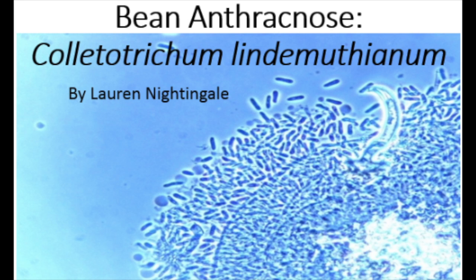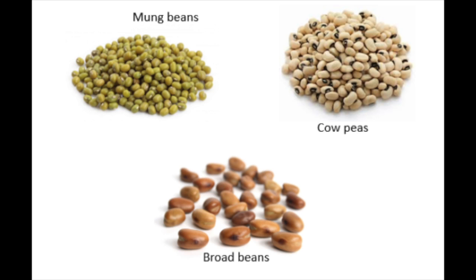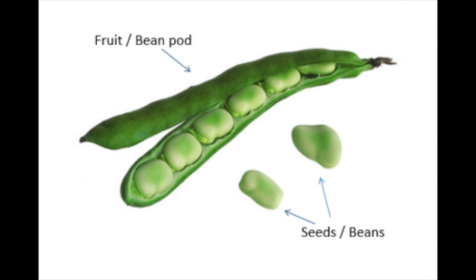This disease affects crucial legume crops in the Phaseolus genus, such as snap beans, lima beans, scarlet runner beans, mung beans, cowpeas, and broad beans. These host crops are most easily identified by their distinct fruit or bean pods — sealed containers for seeds that may split along the seam at maturity.